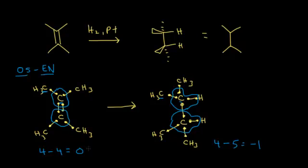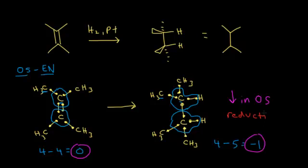We can look at our original oxidation states — being zero — and see they went from zero to negative one. That's a decrease in the oxidation state, and a decrease in the oxidation state means reduction. So this is a reduction reaction — the alkene is reduced by the addition of these two hydrogens. You'll also see the definition that a gain in hydrogens is reduction, often found in organic chemistry textbooks. But it makes more sense to assign your oxidation states and watch them change as your molecule gains hydrogens. So this is a reduction.